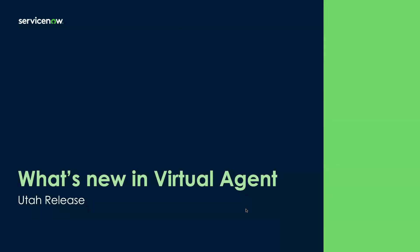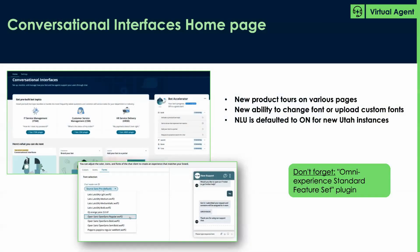Let's start with virtual agent. The first thing I always like to talk about is the conversational interfaces homepage. We've made enhancements to this in the Utah release. For example, we have new product tours on various pages. We have the new ability to change the font of your virtual agent or upload a custom font. Something to call out is that NLU is now defaulted to on for new Utah instances. Don't forget to install the Omni Experience Standard Feature Set plugin if you're missing features from the CI homepage.